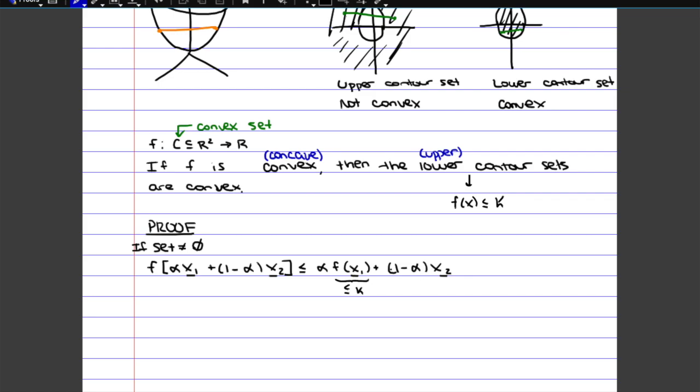And so that implies that this here is smaller or equal to k, and then this one as well. So if we replace k in there, we end up with alpha times k plus 1 minus alpha times k, which if you simplify, it's just going to give you k, because you get alpha k plus k minus alpha k. So the alpha k is cancelled out, and you're left with k.